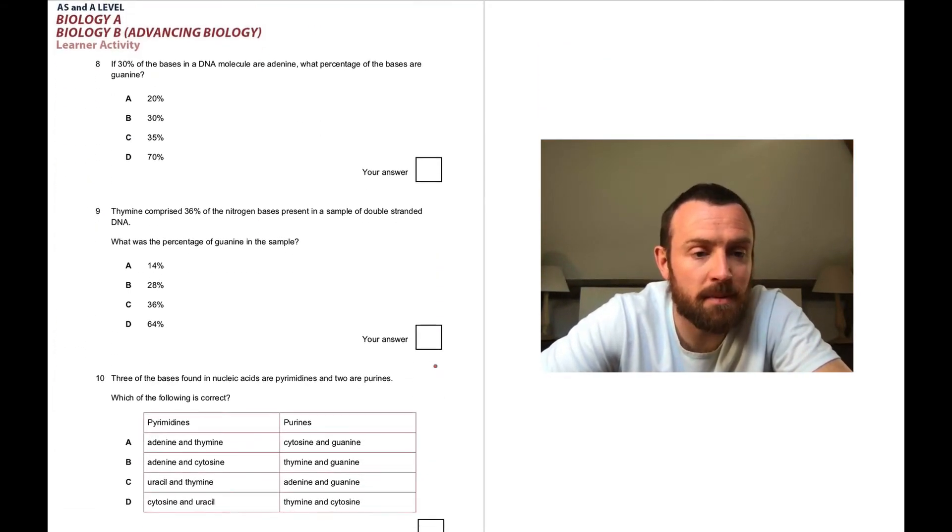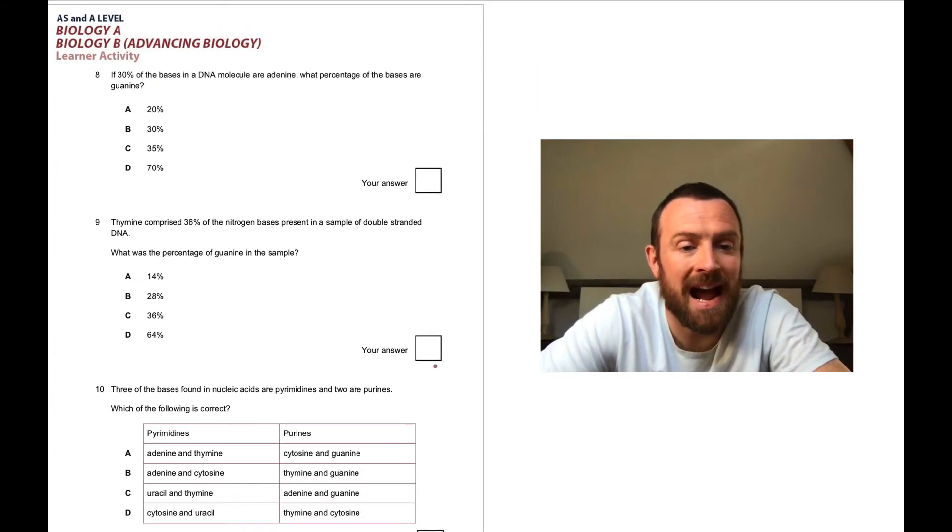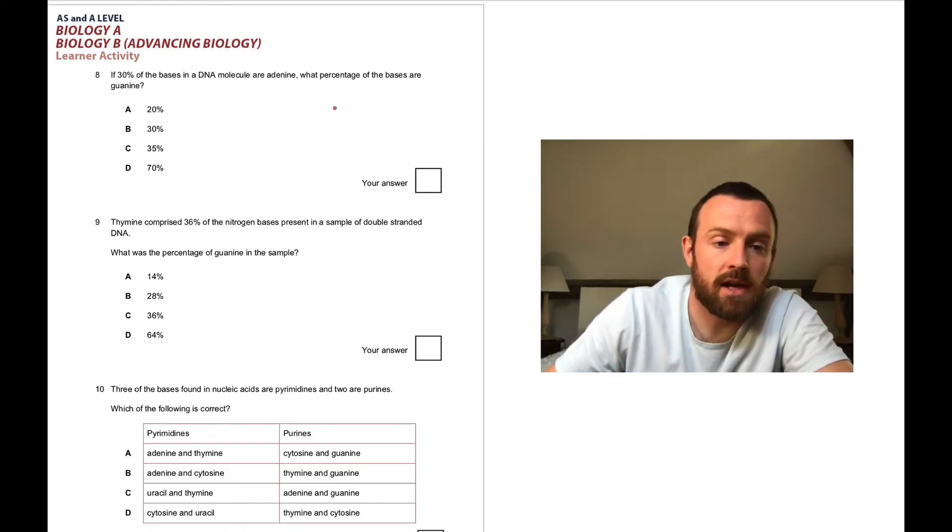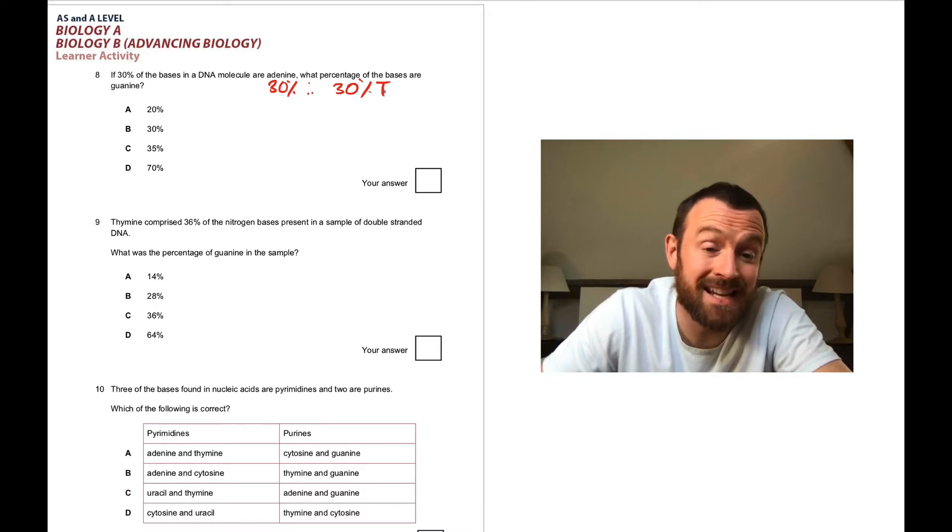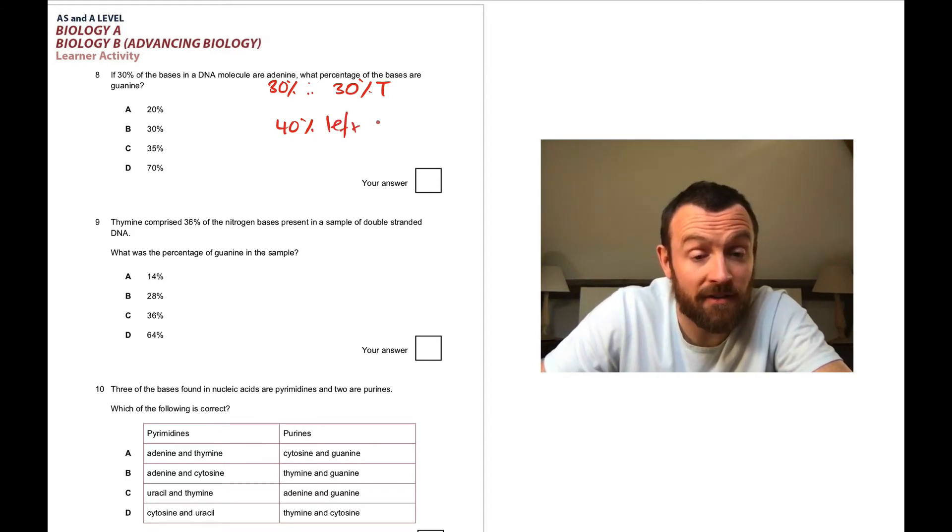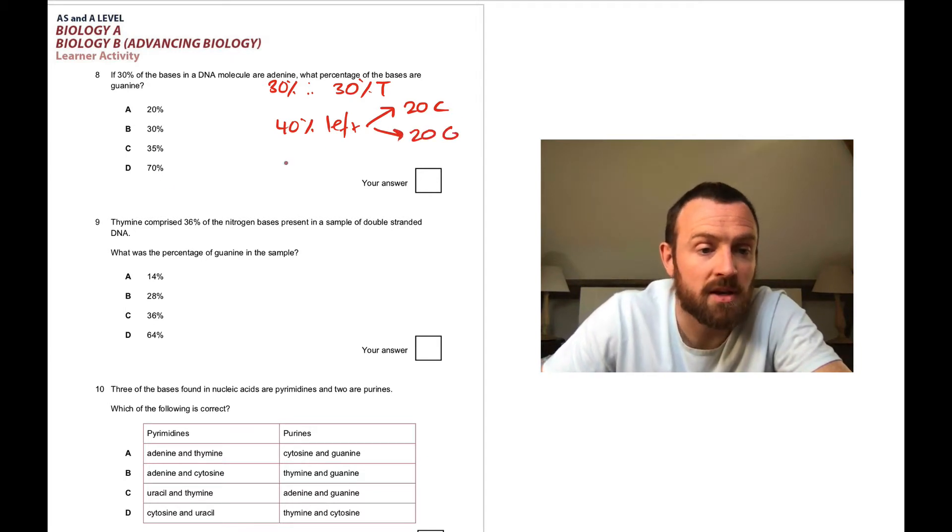Question eight: if 30% of the bases in a DNA molecule are adenine, what percent are guanine? Adenine is 30%, therefore thymine is also 30%, so that's 60% total. We're left with 40%, and of that 40%, 20% has got to be C and 20% has got to be G because they pair up. Therefore it's 20%, answer A.